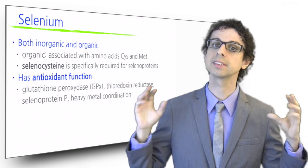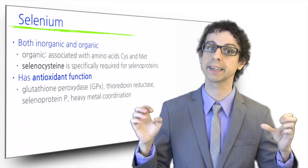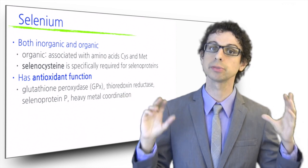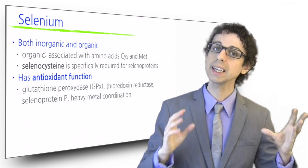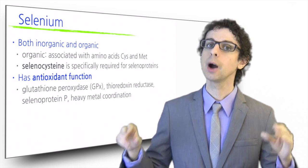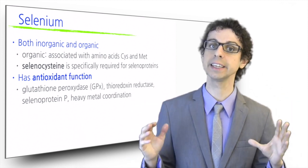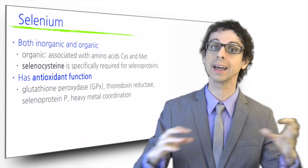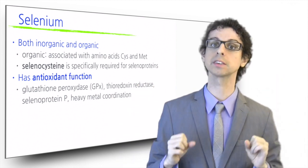Furthermore, selenium by itself can also coordinate metal ions, thus preventing the formation of free radicals. When we eat tuna contaminated with mercury, we have to thank its high selenium content, which complexes mercury and dramatically reduces its toxicity.